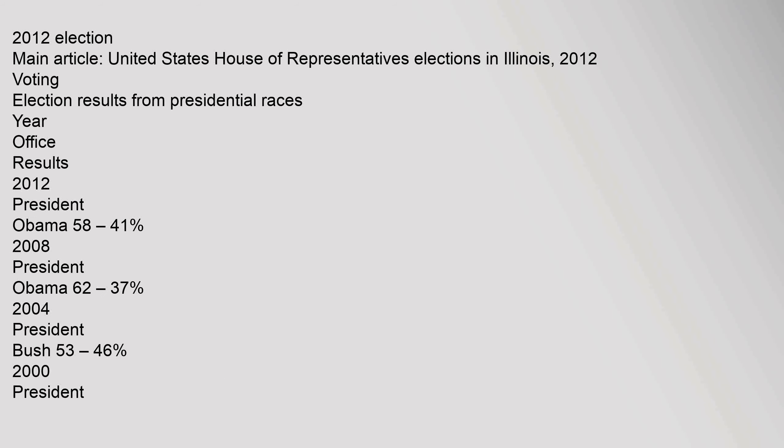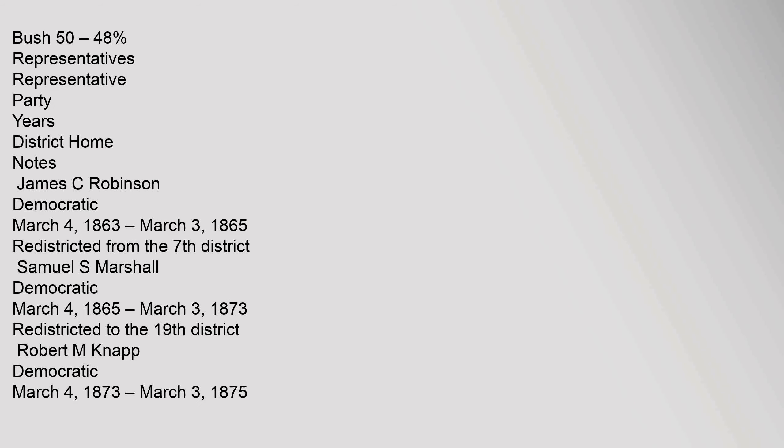2012 Election — Main Article: United States House of Representatives Elections in Illinois 2012. Voting — Election Results from Presidential Races: 2012: President Obama 58% to 41%. 2008: President Obama 62% to 37%. 2004: President Bush 53% to 46%. 2000: President Bush 50% to 48%.